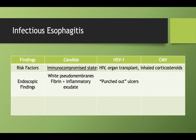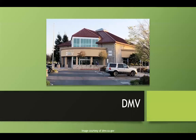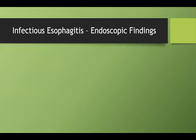HSV1 presents with punched-out ulcers, and CMV presents with linear ulcers. A helpful mnemonic: think of the DMV — the Department of Motor Vehicles — which is notorious for long lines. So there's always a line at the CMV, helping you remember that linear ulcers are CMV-related.